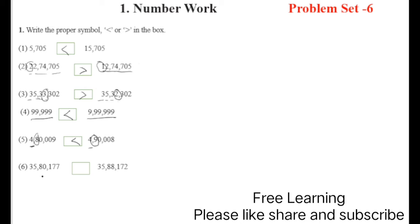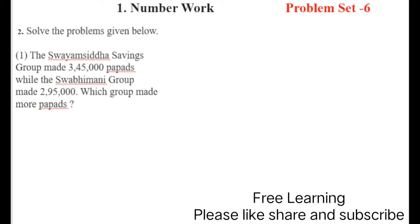Now count the digits: three, six, seven — three, six, seven — three, six, seven. See the number — first: same; second: same; third: same; fourth: here are zero and eight. Eight is bigger so we write this. I hope all of you have understood this question. Now let's start question number two.